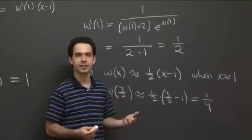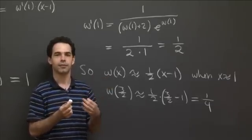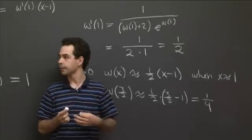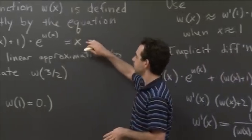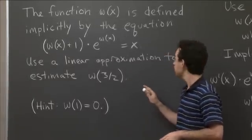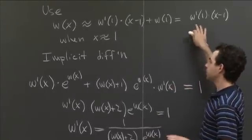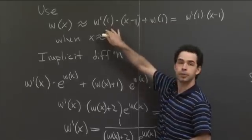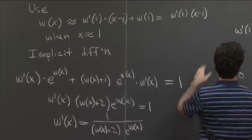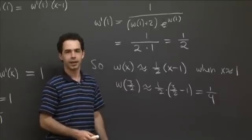If you wanted a better estimate, you could try iterating this process by choosing a base point even closer to x = 3/2. To sum up: we had an implicitly defined function w and wanted to estimate its value where we couldn't compute it explicitly. We used our normal linear approximation method, with the only unusual step being that we had to use implicit differentiation to compute the derivative appearing in the approximation formula.